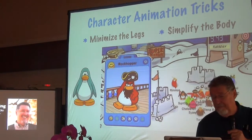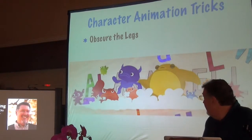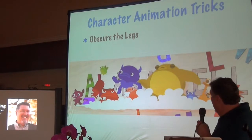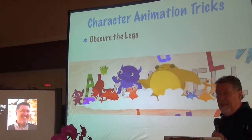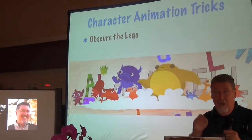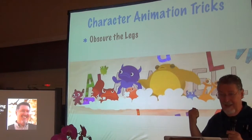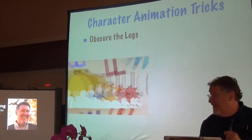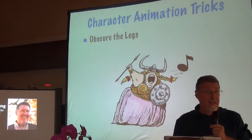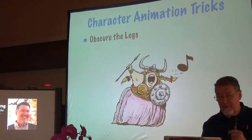Another trick is to obscure the legs. This is from Emma's Alphabet — they've covered the legs with dust. The characters run through the scene, break everything up, and actually don't move except going up and down. They don't actually run — there are no moving cycles here. They just trick the whole scene. And then there's the Terry Young School of Animation, where you obscure the legs and just move things around the screen.